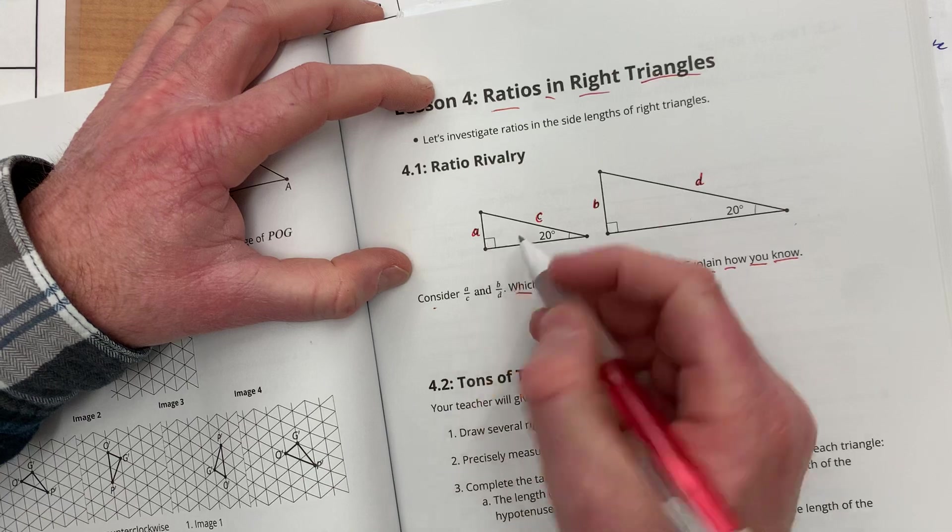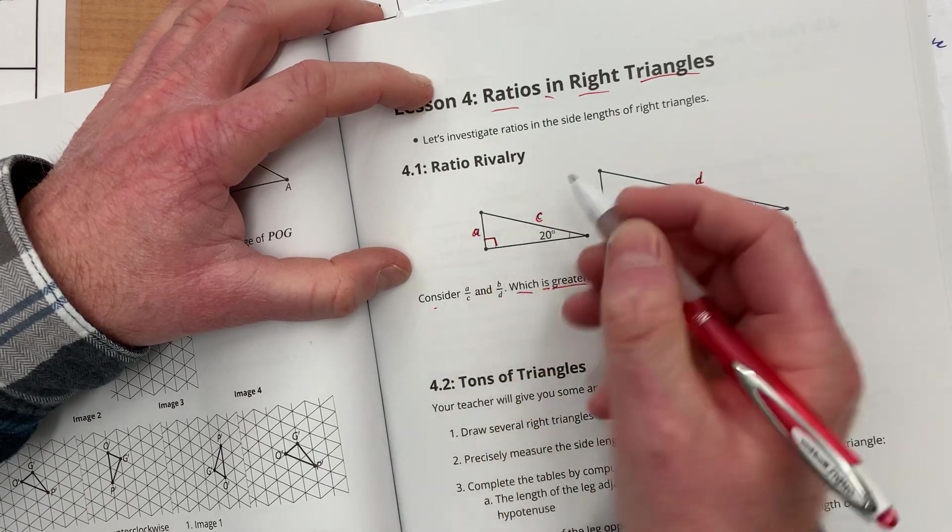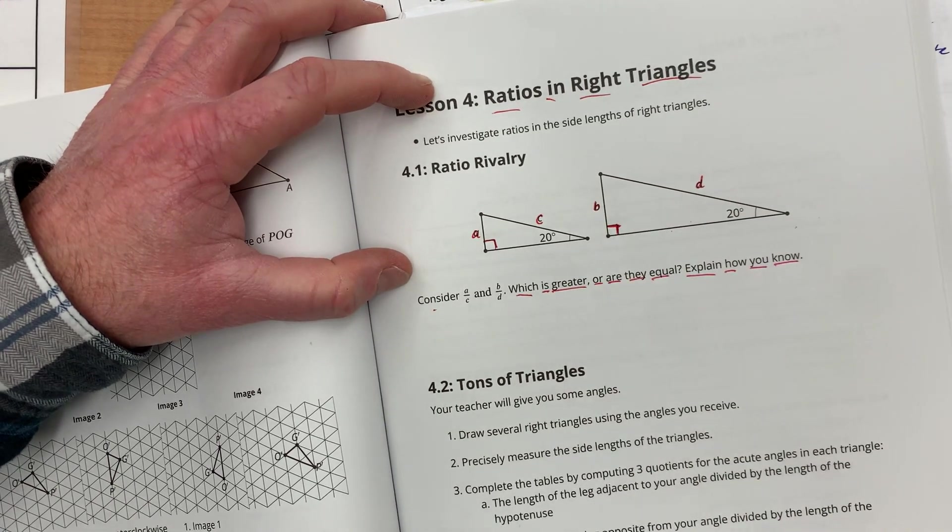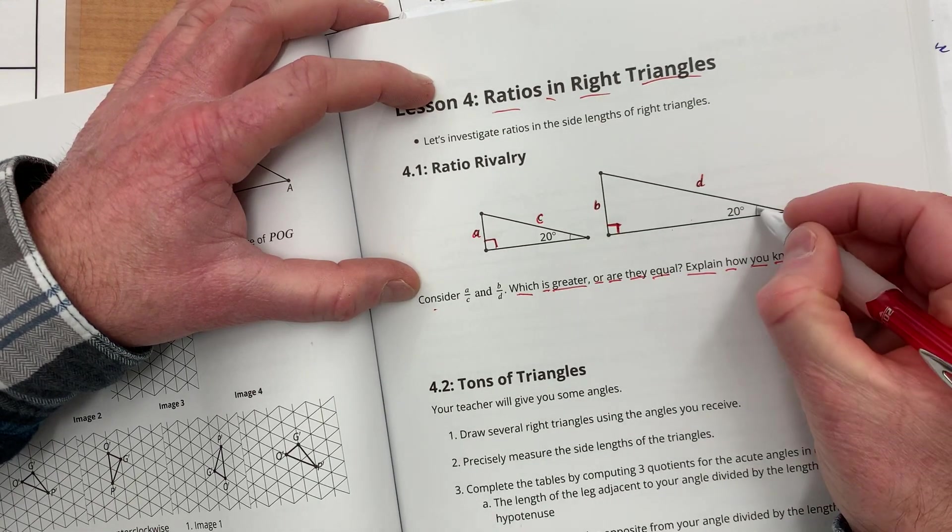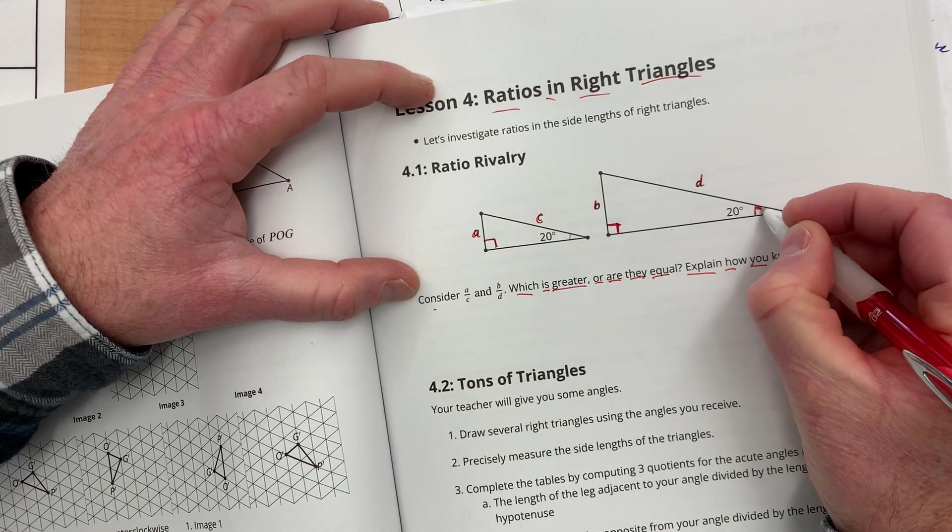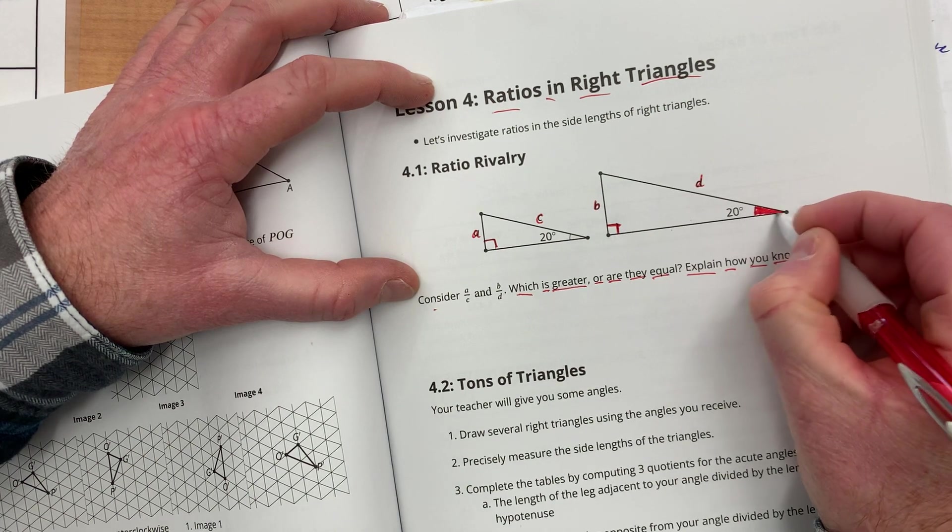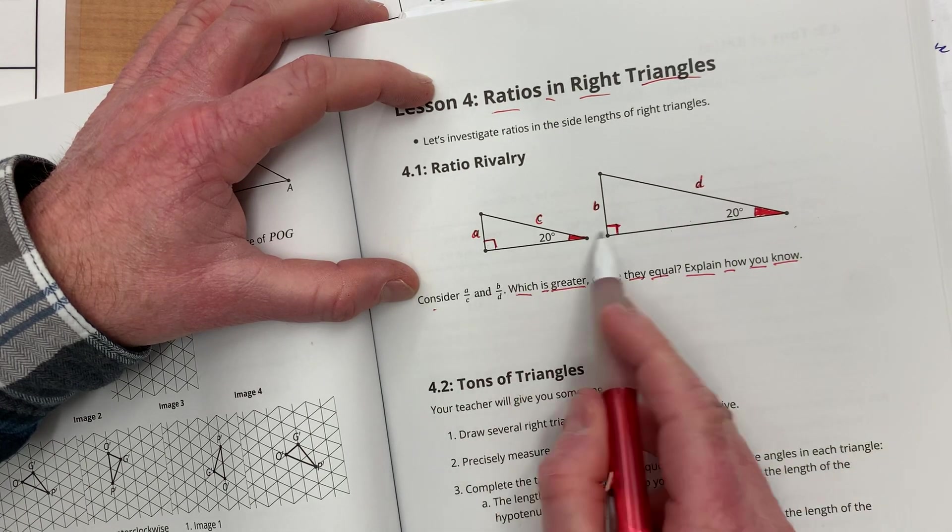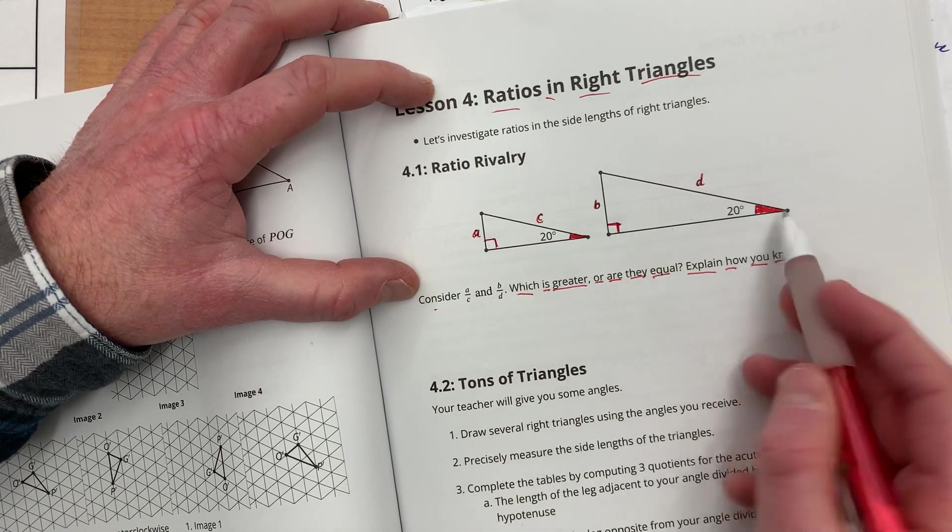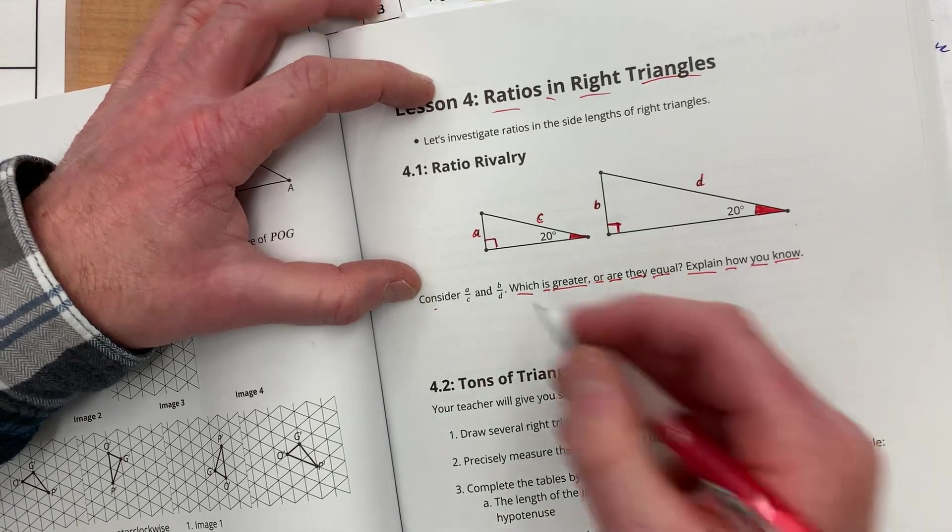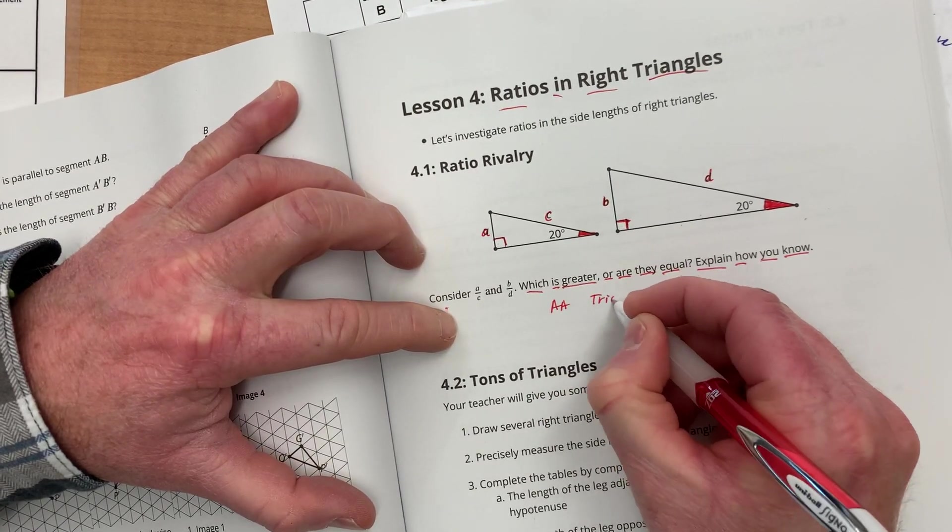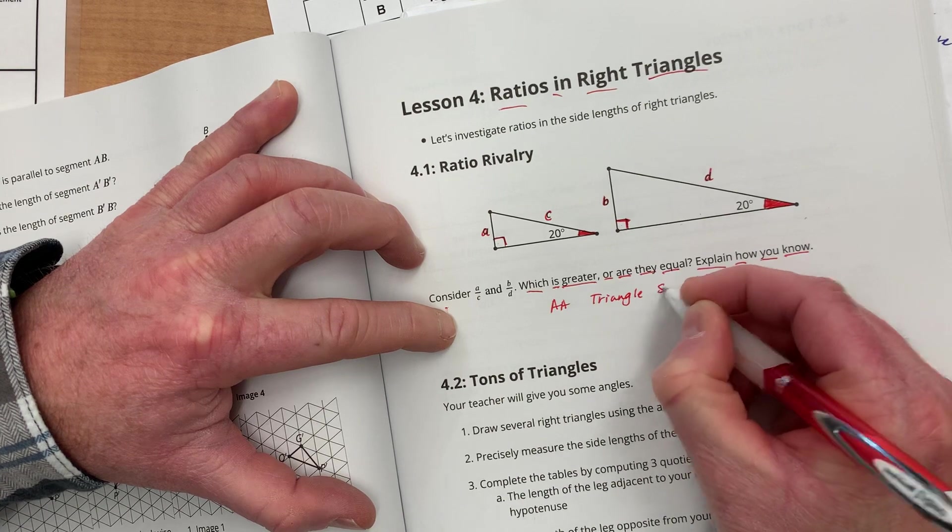So, first of all, I notice that there's a 90 degree angle, so they have one angle in common. Then I also notice this 20 degree angle, so they have a 90 and a 20. So I know by angle, angle, triangle similarity theorem...